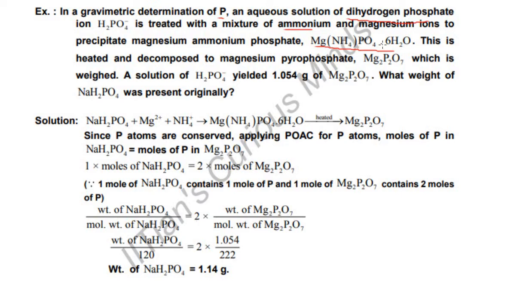This is further decomposed from magnesium pyrophosphate, which is weighed. A solution of H2PO4- yielded 1.054 grams of Mg2P2O7. What weight of NaH2PO4 was present originally?